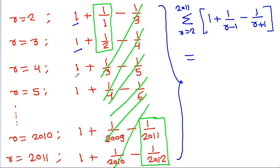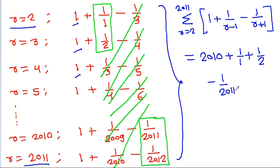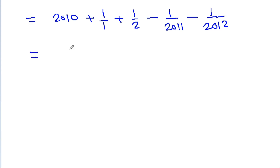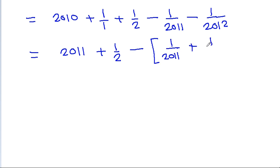The sum of 1s from r=2 to 2011 gives 2010. Plus 1/1 plus 1/2, minus 1/2011 minus 1/2012. This equals 2010 plus 1 plus 1/2 minus 1/2011 minus 1/2012, which simplifies to 2011 plus 1/2 minus (1/2011 plus 1/2012).